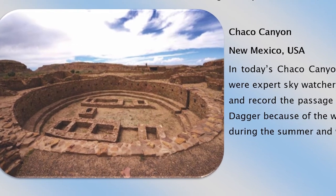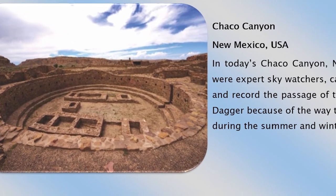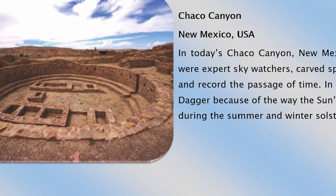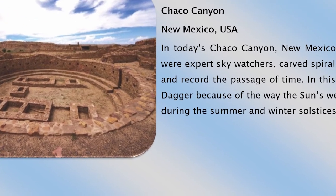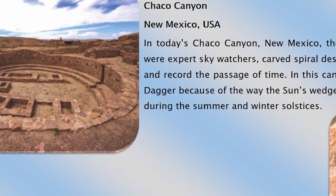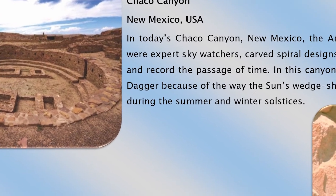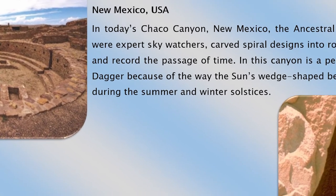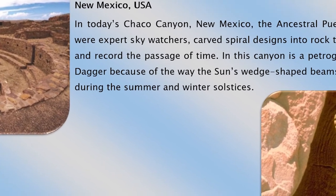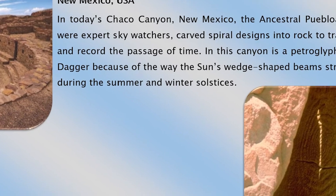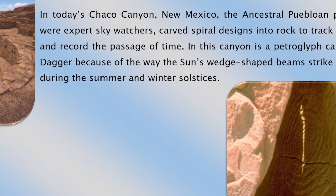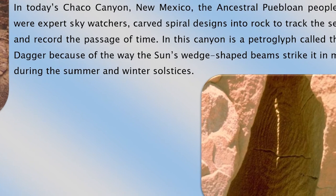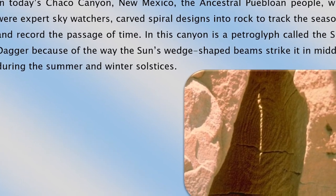In Chaco Canyon, New Mexico, the ancestral Puebloan people, who were expert sky watchers, carved spiral designs into rock to track the seasons and record the passage of time. In this canyon is a petroglyph called the Sun Dagger because of the way the sun's wedge-shaped beams strike it at midday during the summer and winter solstices. This picture shows how the sun will strike right in the middle of that spiral to indicate when the solstice occurs.